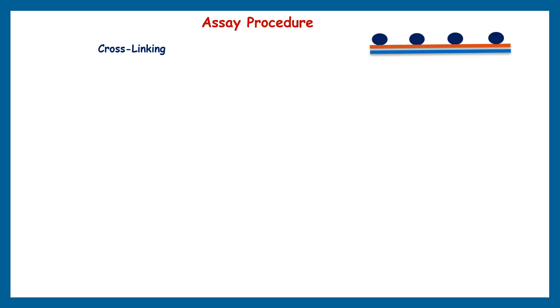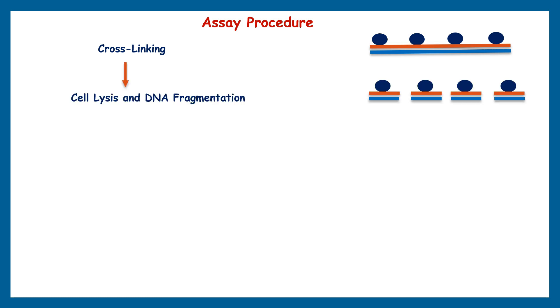Now let's come to the procedure of ChIP sequencing. The first step is cross-linking. In this step, cells are treated with formaldehyde, which is a good cross-linking agent. It creates covalent bonds between proteins and DNA within the cell, fixing the interaction between them. Then the cross-linked cells are lysed to release the chromatin, and the complex of DNA and protein comes out from the cells.